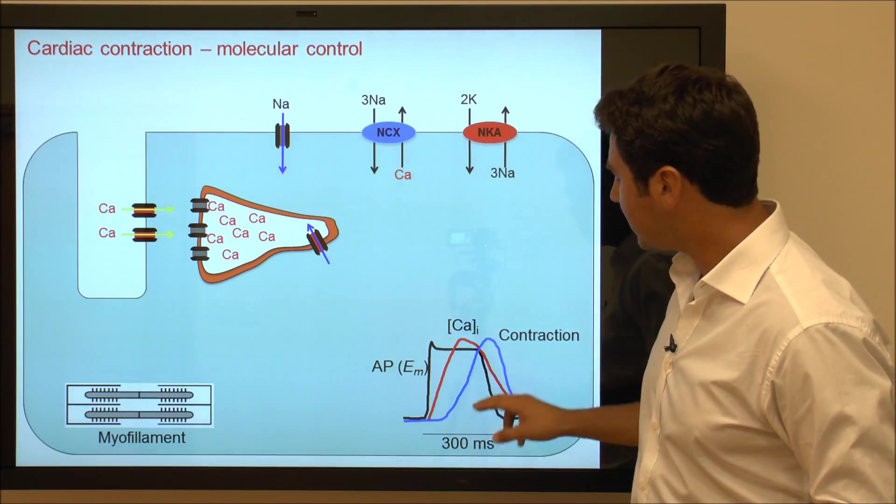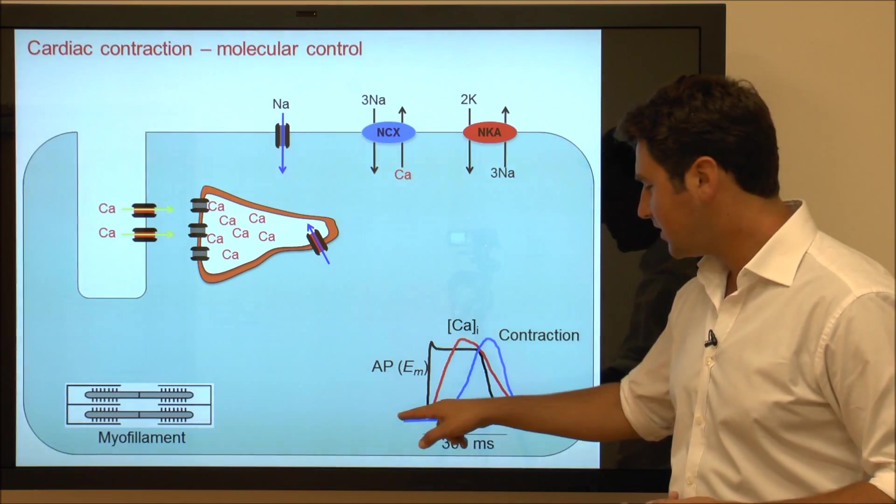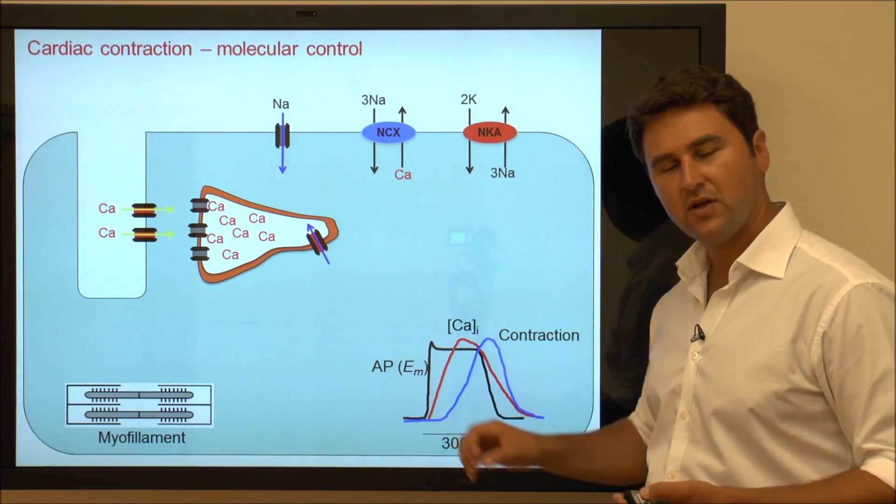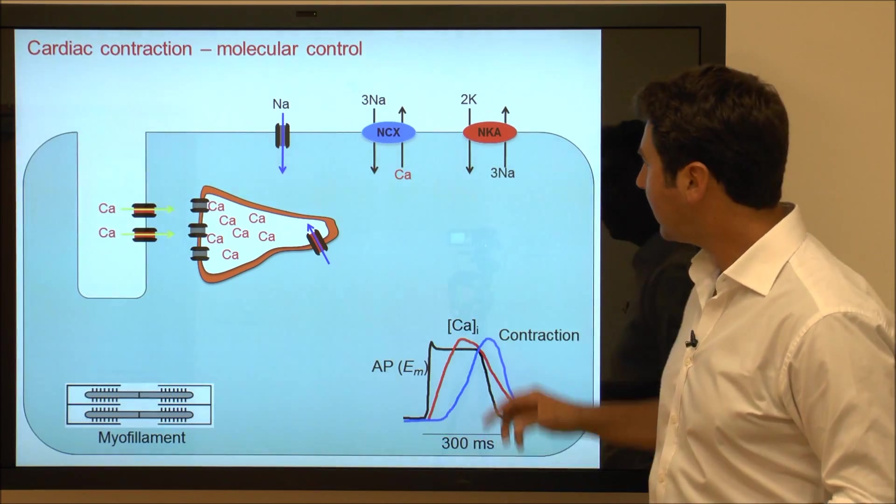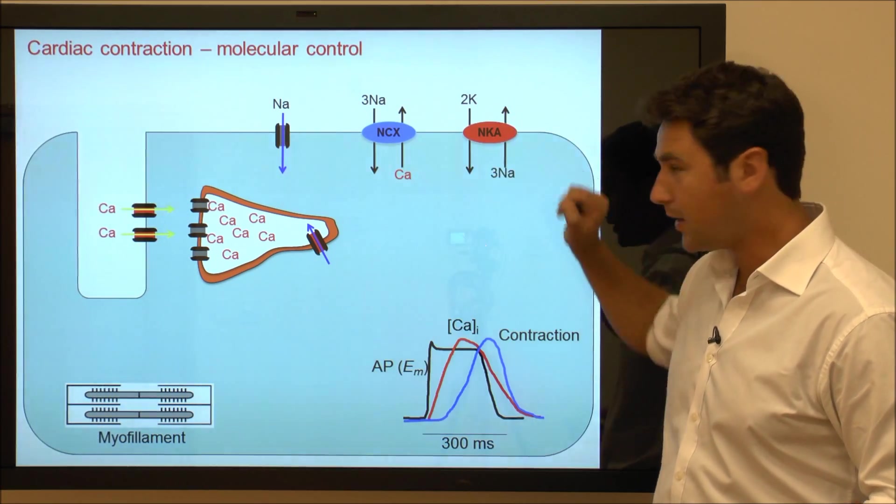The first thing that happens is the resting cell is kept at resting membrane potential at minus 90 millivolts by the sodium-potassium ATPase pump.